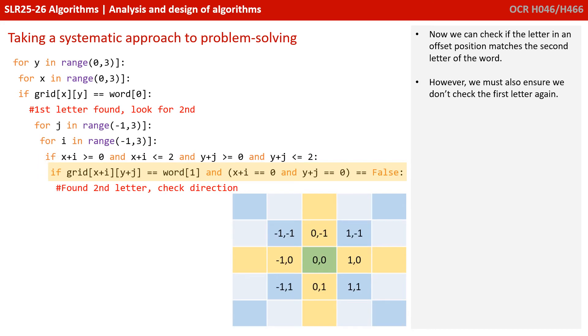So here we've introduced the variables I and J, representing the offsets from the original X and Y positions. Now, it can get a little bit confusing if you don't use sensible variable names, but for algorithms like this, it's quite common to just use single letters for variable names. Perhaps it would have been better in this instance if we'd had offset X and offset Y as names instead. So we can now go ahead and check if the letter in the offset position matches the second letter in our word. And we need to make sure that we're not going to check the original first letter as well. So we've got an exception to the rule, if X plus the offset and Y plus the offset equals 0, then that would be the first letter and we don't want to check that again. So we've introduced just an extra little condition to the rule.